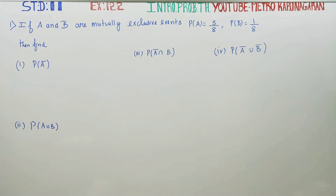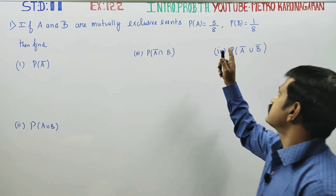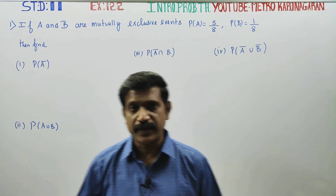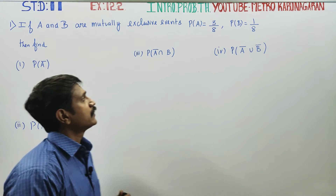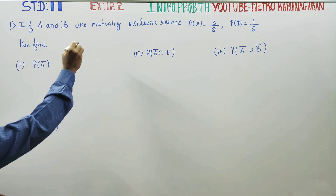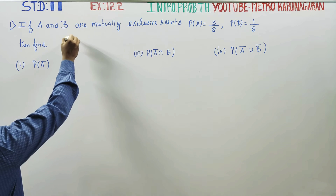Dear Learn Standard Students, in Exercise No. 12.2, Question No. 1: if A and B are mutually exclusive events, given P of A and P of B, find the required probabilities for mutually exclusive events.